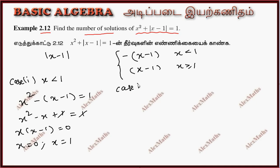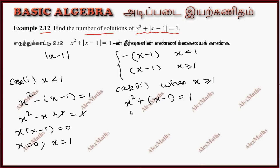Case 2: when x is greater than or equal to 1. In this case, x squared plus x minus 1 equals 1, which simplifies to x squared plus x minus 2 equals 0. This is a quadratic equation.